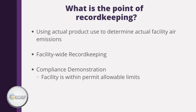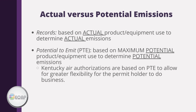Accurate record keeping is essential when determining compliance with your permit requirements and maintaining legal defensibility of your data. It is important to use actual product usage and to include all emission sources when demonstrating compliance with air permit requirements. Kentucky determines the type of air permit required for a facility based on the potential to emit, which is the maximum potential an emission source can produce. This determination assumes the source operates 24 hours a day, 7 days a week, 52 weeks a year, to allow greater flexibility for the permit holder to operate. However, any fees associated with the permit are based on actual usage, which is another great reason to keep accurate records.